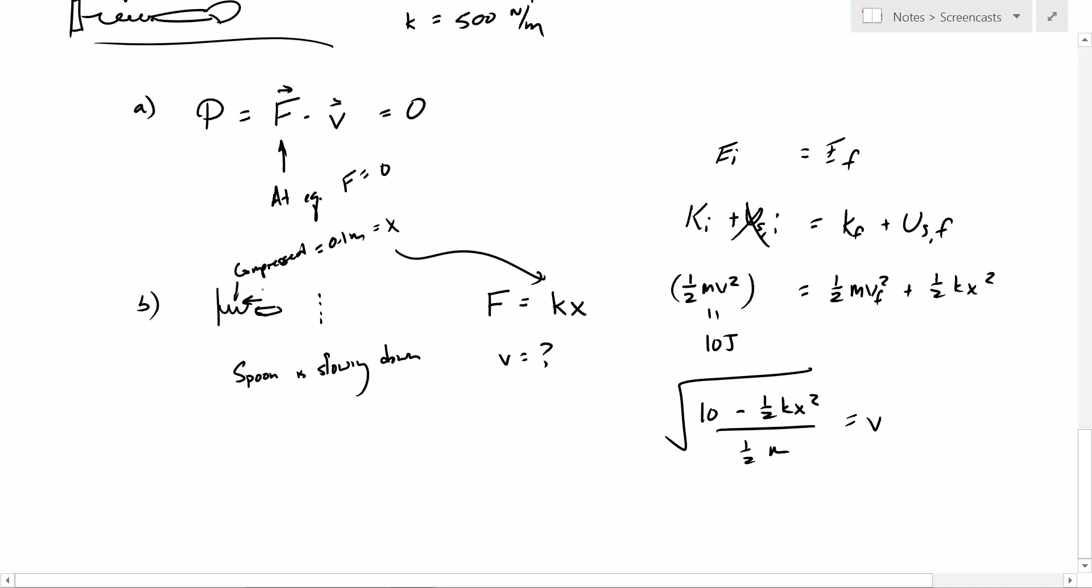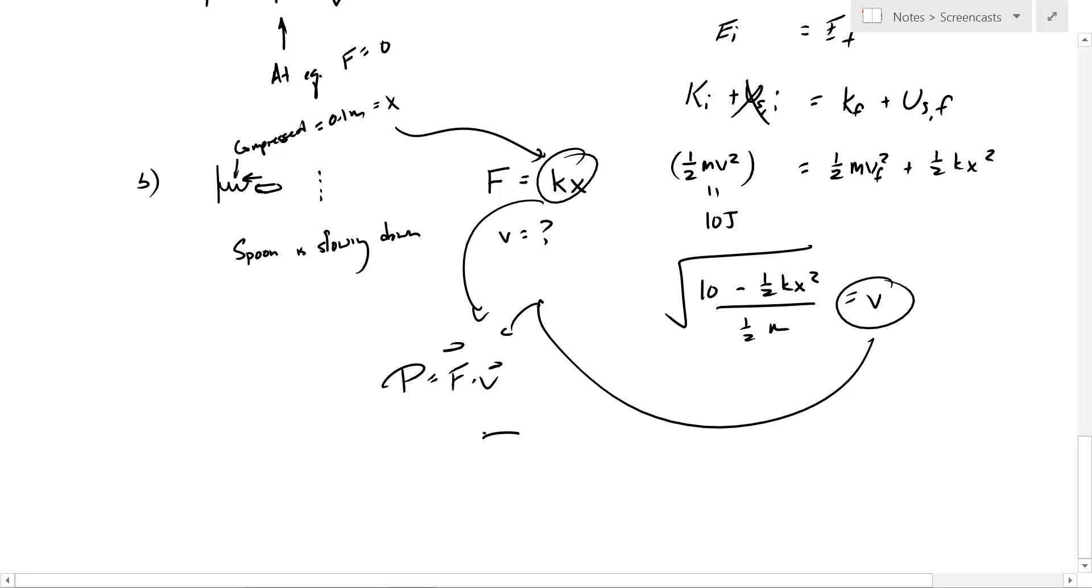We know that v is, so, yeah. So, then, we have v, we have f, and go back to this good old definition of power. We note that the spoon is going that way, the force is going that way, so the dot product will be negative. You guys can find a calculator again, numbers.